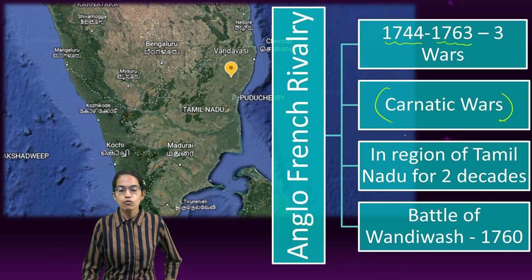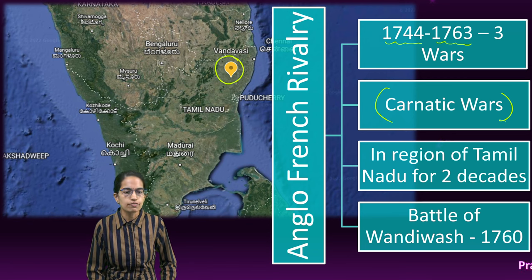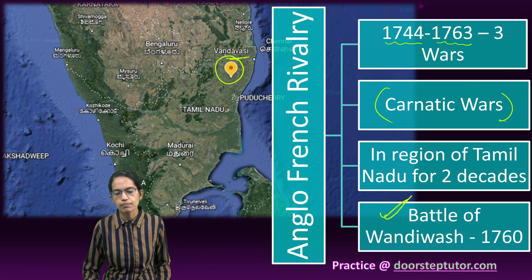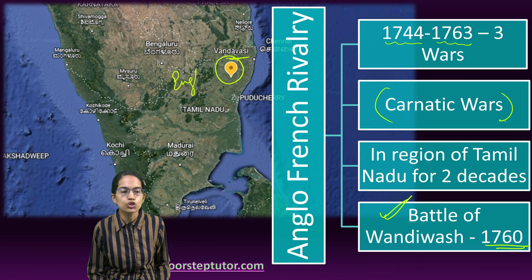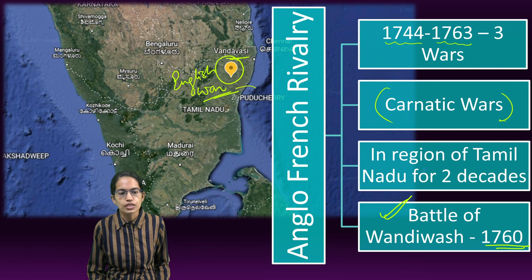This war was primarily in the region of Tamil Nadu, as you can see, and this was the area which was known as Wandiwash and this was where the Battle of Wandiwash took place in 1760. Finally, the English won. The French had to withdraw and there was the capture of Pondicherry by the English in 1761.